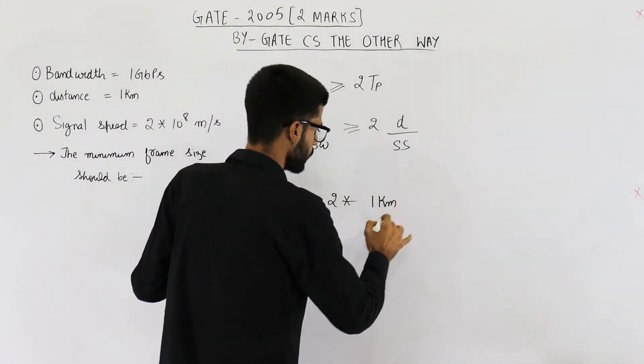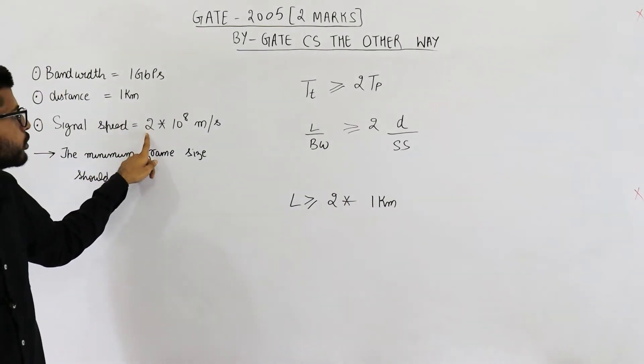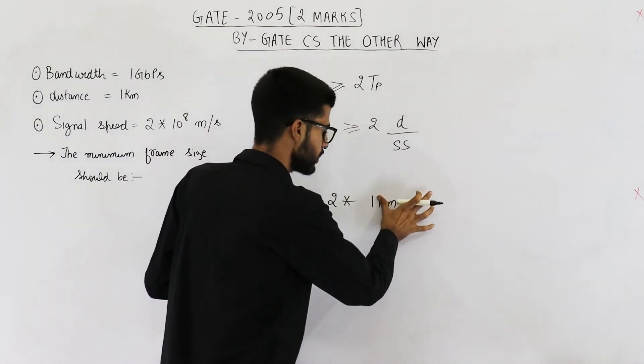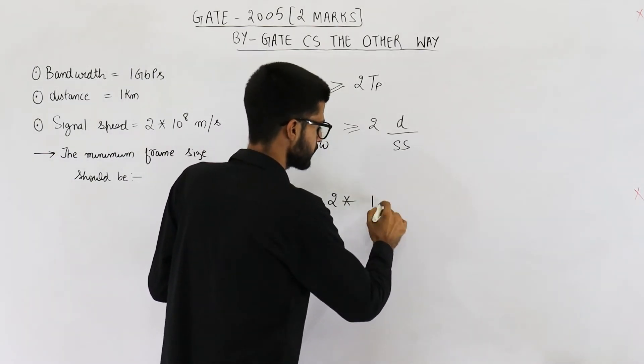1 kilometer divided by signal speed is 2 into 10 raised to the power 8 meters per second. So convert kilometers into meters. First of all, let's convert distance into meters because signal speed is also in meters per second.